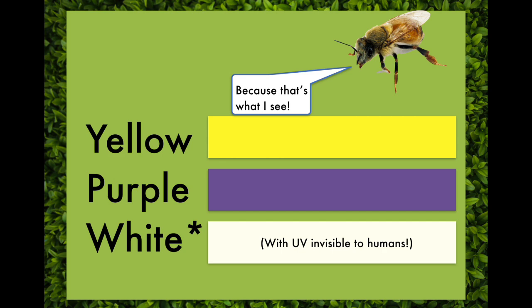Bees have photoreceptors in their compound eyes that can detect yellow, purple, and UV pigments, just like our eyes can detect red, green, and blue pigments. Every color that we see is some mix of those three colors, just like everything that a bee can see is some mix of yellow, purple, and ultraviolet. So that's why.